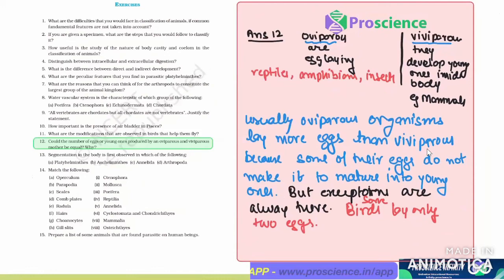So viviparous organisms usually give rise to one or two offsprings only.